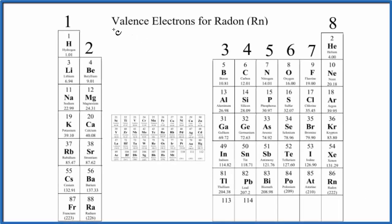There are two ways to find the number of valence electrons for radon, Rn. So the first is fairly easy.